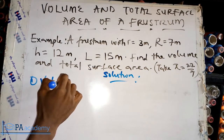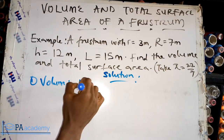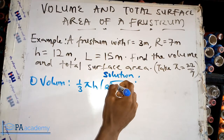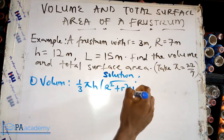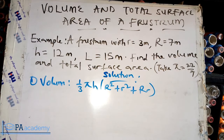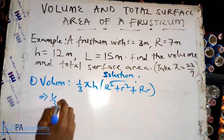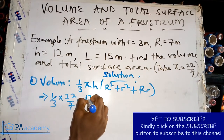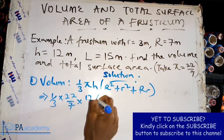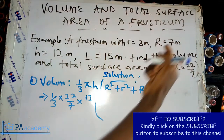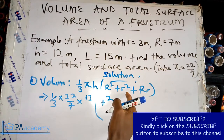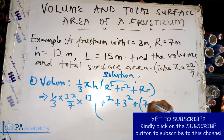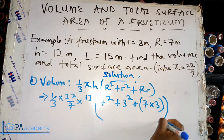The formula for the volume of a frustum is one-third times pi times h, then capital R squared plus small r squared plus capital R times small r. Substituting our values: one-third times 22 over 7 times 12, open brackets, so capital R is 7 — that's 7 squared — plus small r is 3 — that's 3 squared — plus 7 times 3, close brackets.